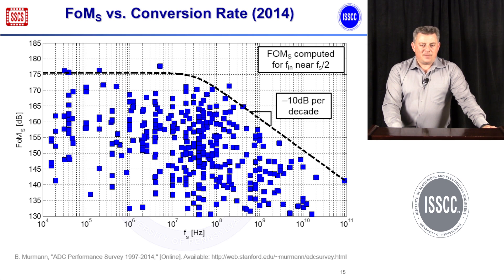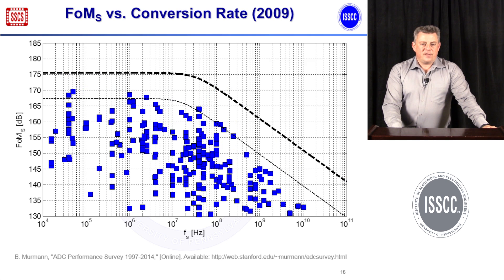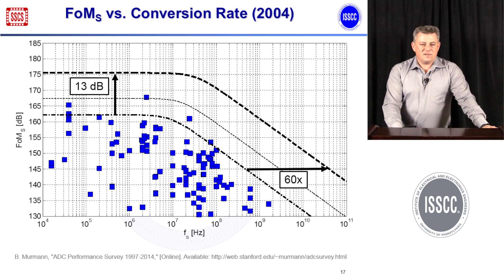Going back in time to 2009 and then to 2014, the low-frequency asymptote moves down and the high-frequency asymptote moves left. Over the past ten years there has been an aggregate improvement of 13 dB — slightly more than 4× — in low-frequency efficiency, and a factor of 60 improvement in the high-frequency asymptote.